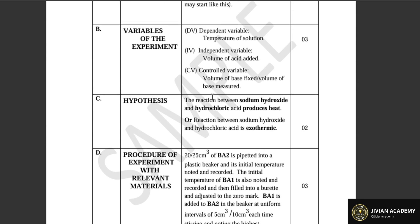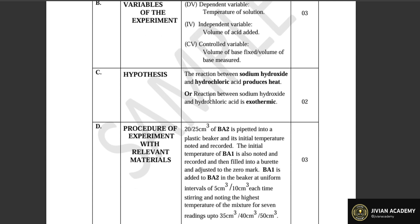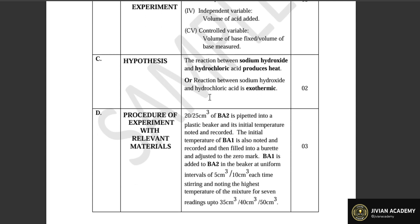The independent variable is the factor that causes change in the reaction — in simple terms, the 'problem causer.' In this case, it is the volume of acid added, since we are adding the acid onto the base and the volume of acid added keeps varying. This becomes the independent variable.